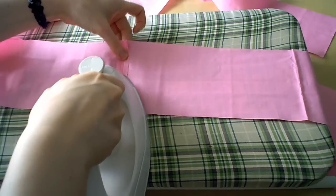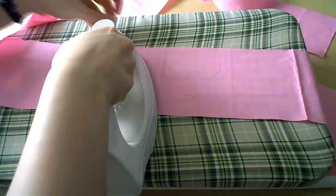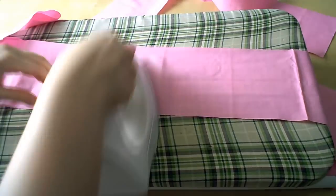Now you can go ahead and trim your seam allowances, and then we'll press them open with an iron. And of course if you've used a serger, you can skip this step.